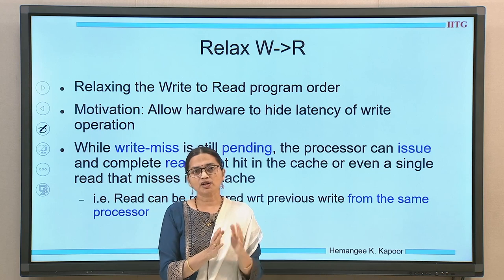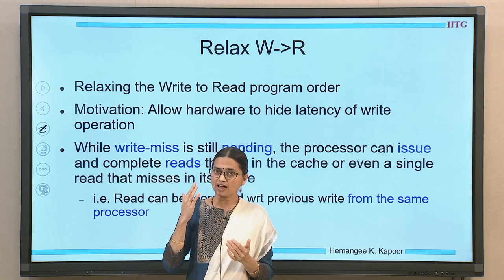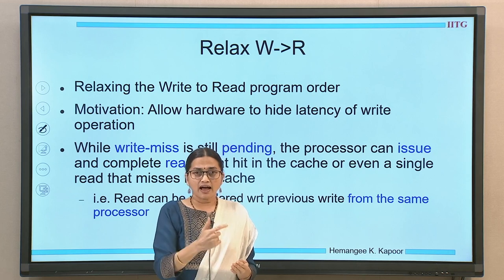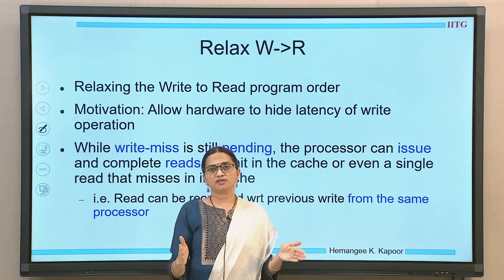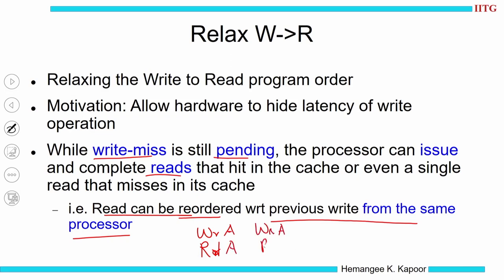While the write miss is still pending, the processor can issue the next read. This read may or may not hit the cache. If it hits, good; if it does not hit and I have a lock-up-free cache, I can keep this read pending and go on for future reads. So I want to keep the write miss pending and let the processor issue future reads for improved performance. This reordering is with respect to the previous write from the same processor — the variables could be different, and they have to be different. If they are the same variable, we cannot reorder them.